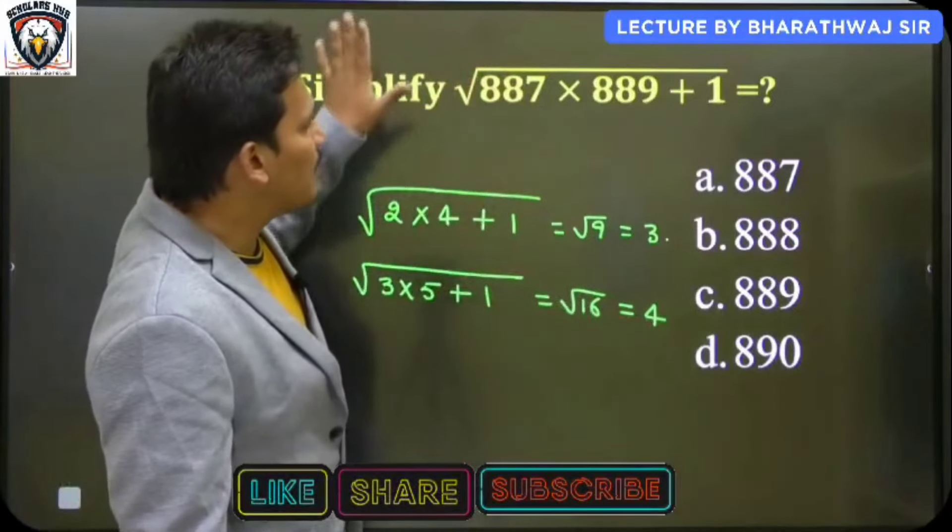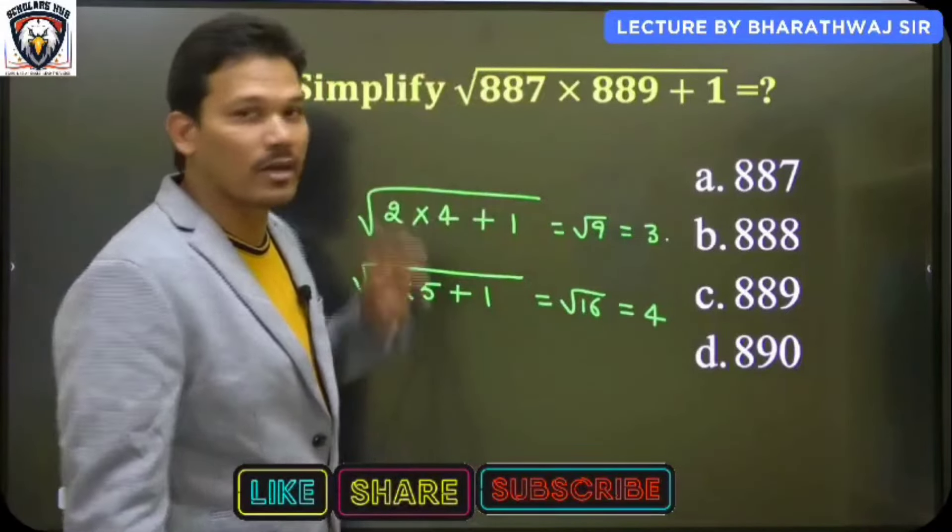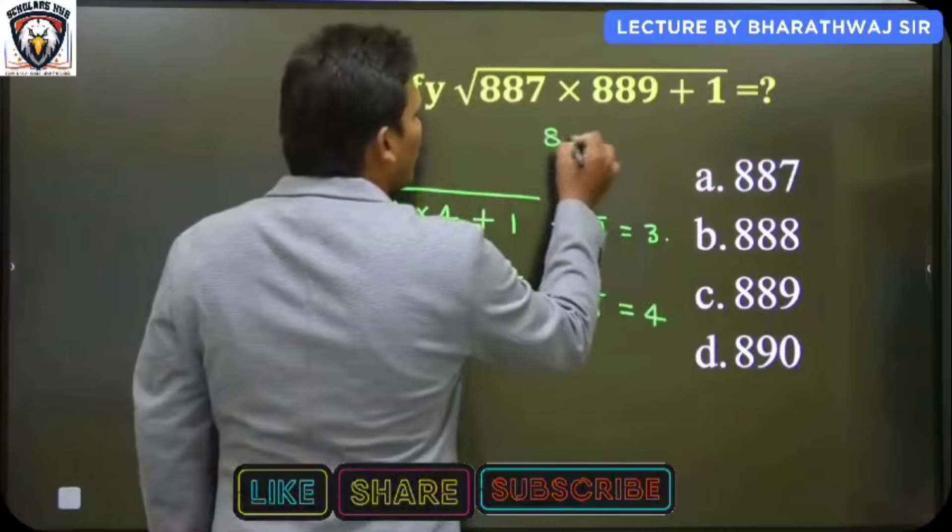In the same way, just apply the same logic here. So your answer for this question is the missing number in between these two numbers. So that missing number equals how much? 888.